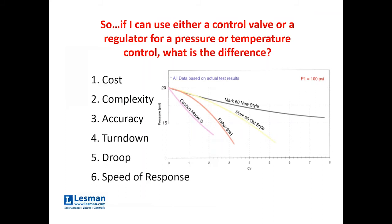They'll both do it, but there's different factors to consider: cost, complexity, accuracy, turndown, droop, which shows up as inaccuracy as flows change, and speed of response.